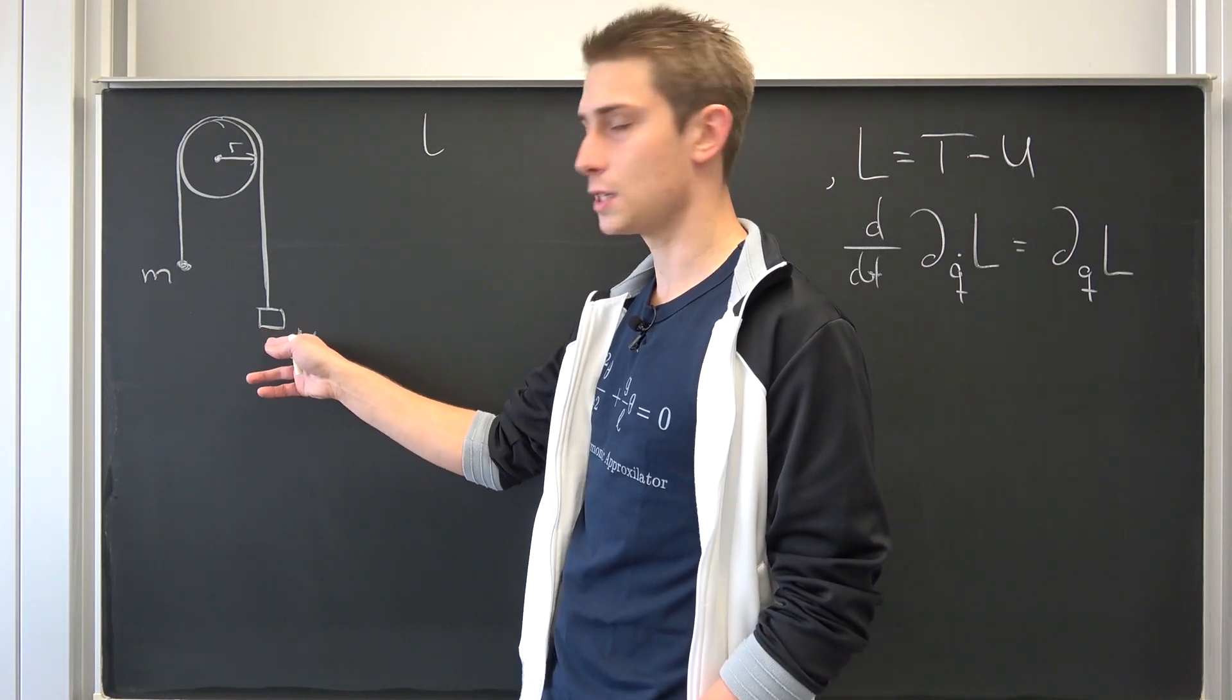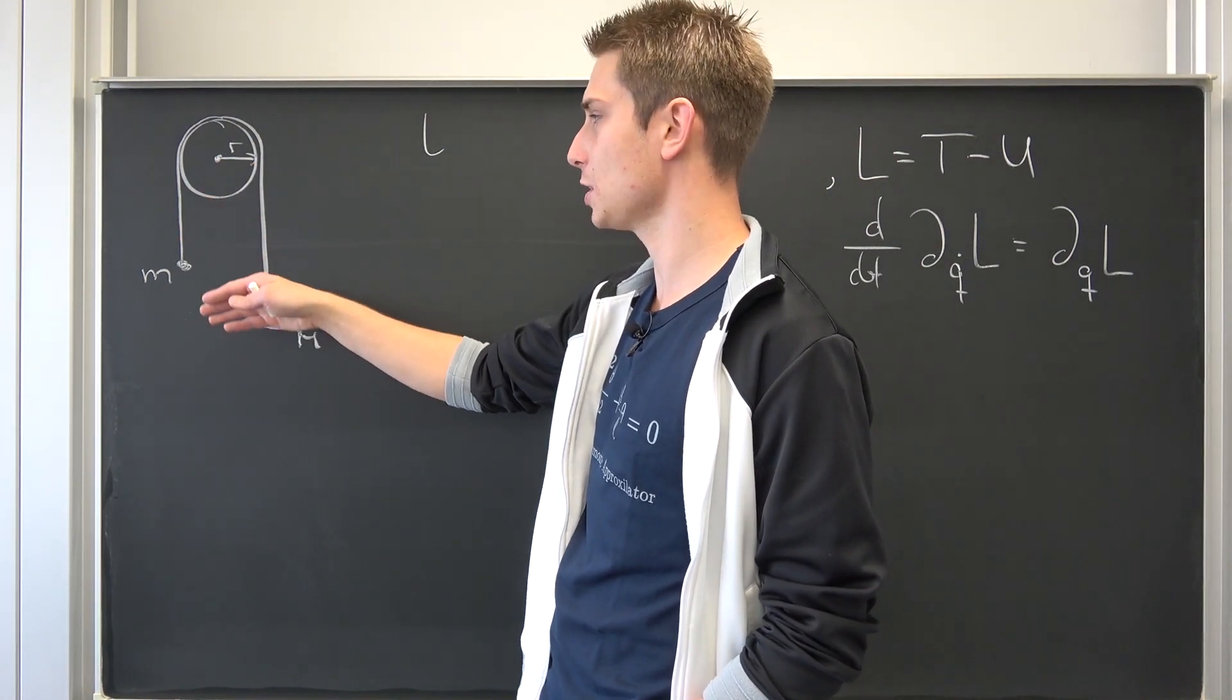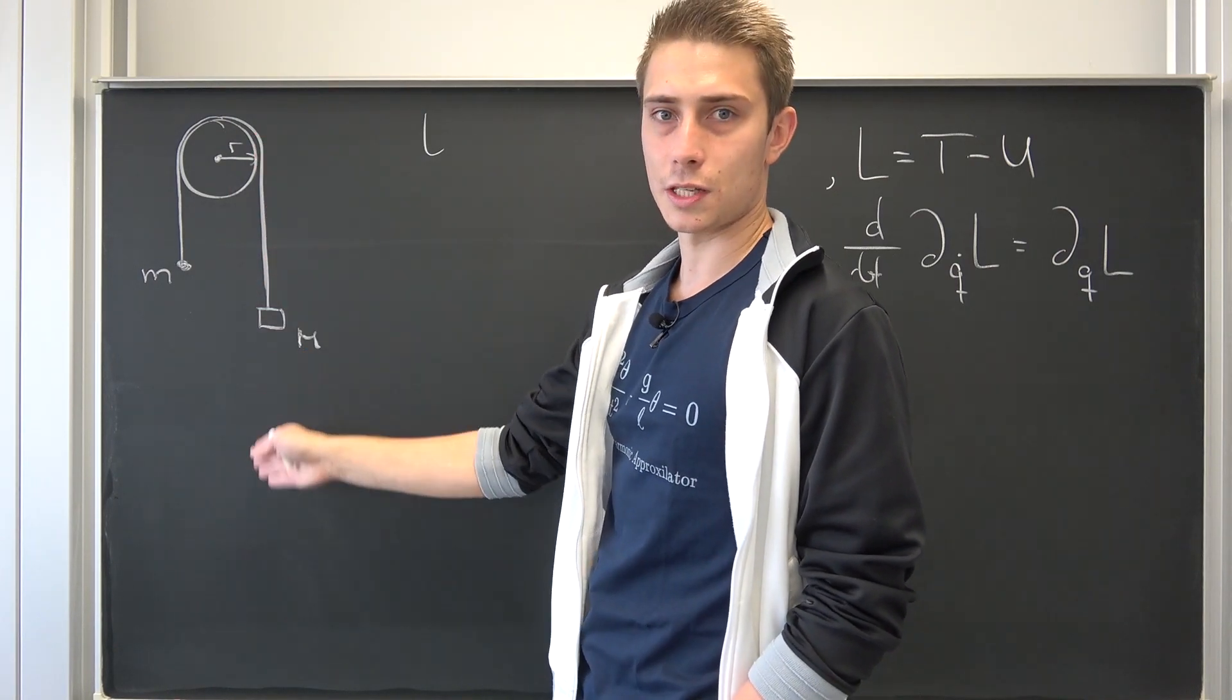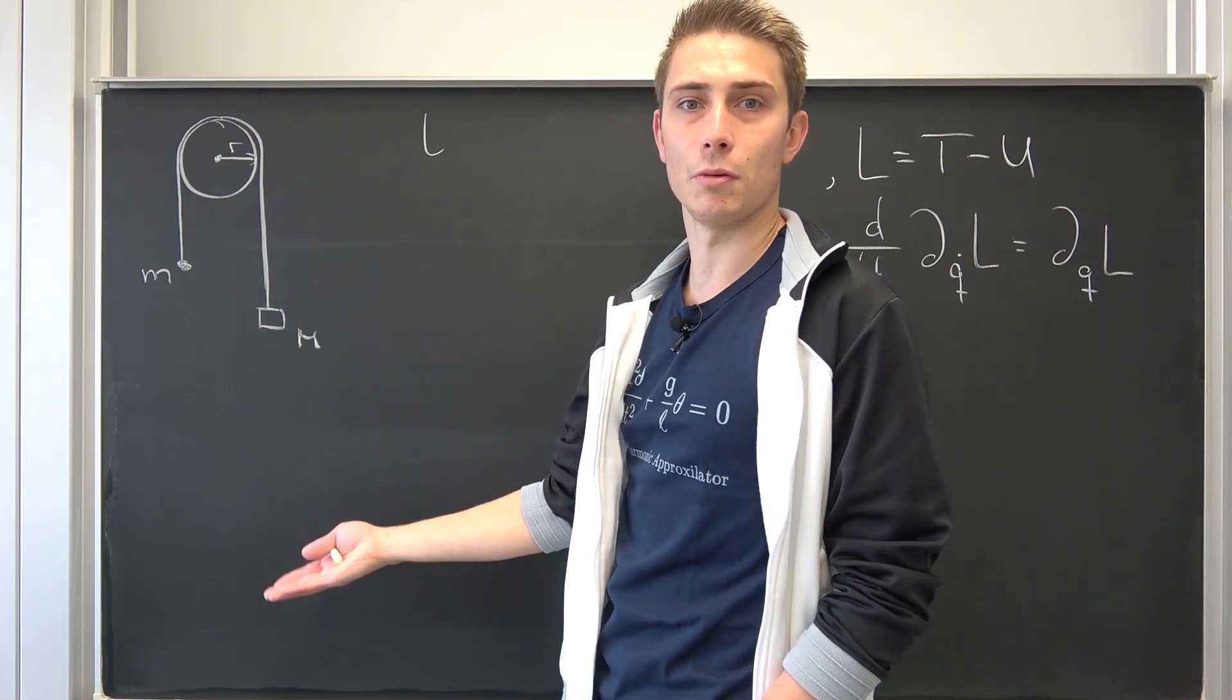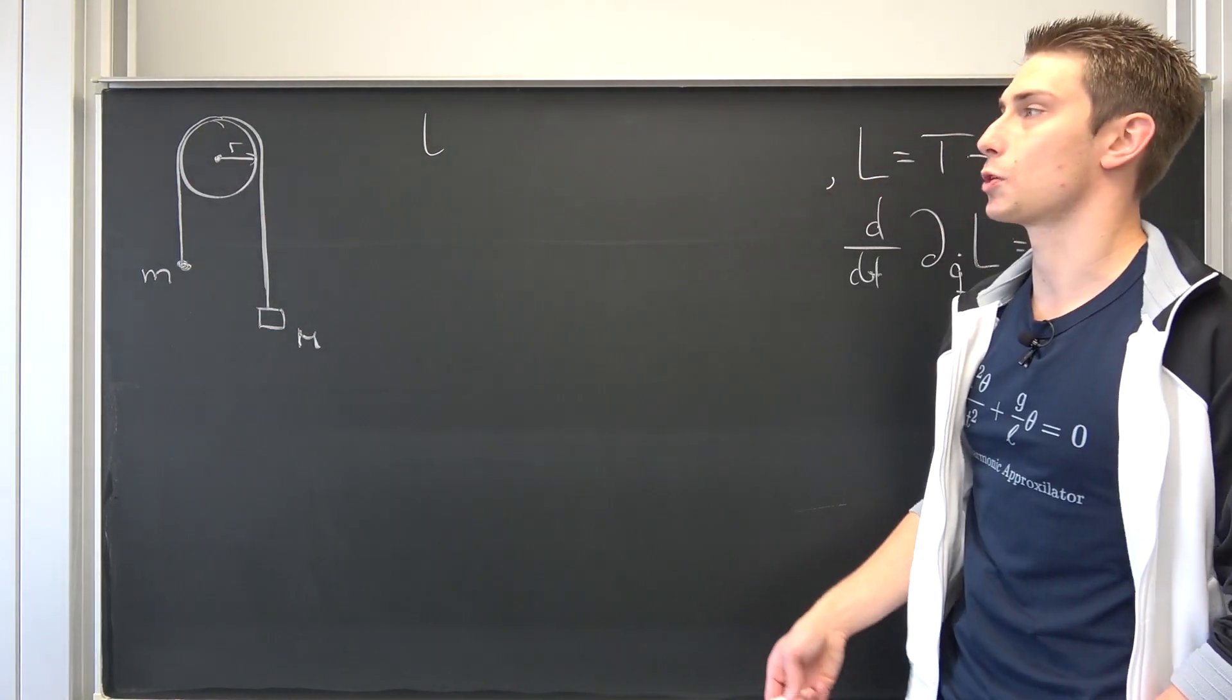What is going to happen physically? Well, this mass is bigger. This thing is frictionless. Let's say it's frictionless. And it's going to go in this direction. It's going to fall down, basically, our bigger mass M, and it's going to drag this one with it.